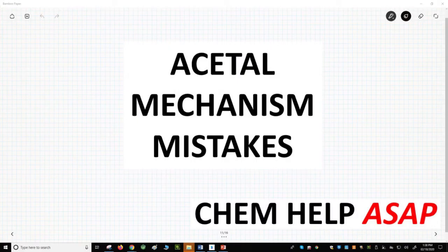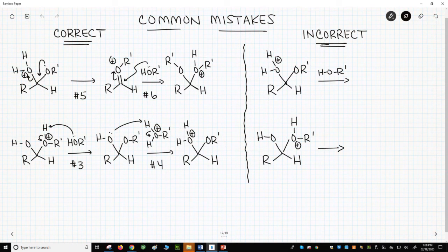Good day to you from Chem Help ASAP. Let's see two common mistakes that students make when drawing out the acetal mechanism. On the screen I have two transformations in the seven-step pathway from an aldehyde to an acetal. The full mechanism is in the previous video in this playlist.